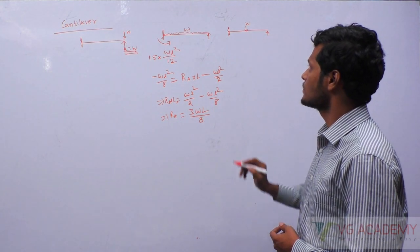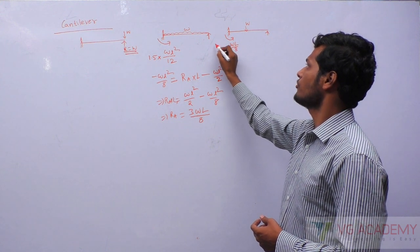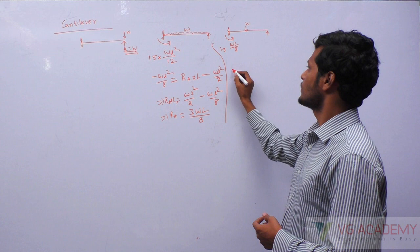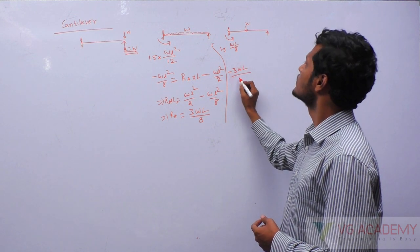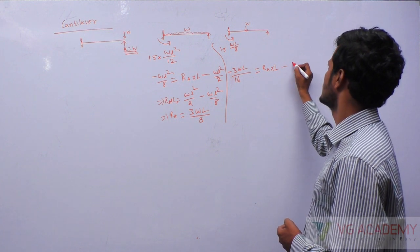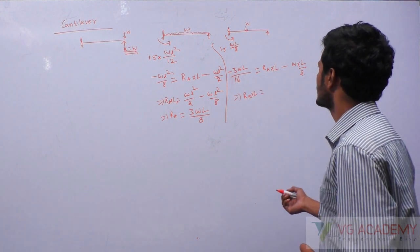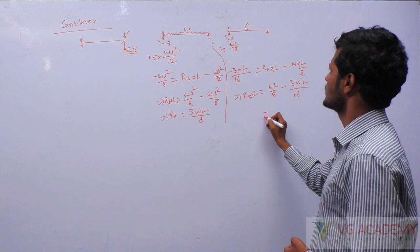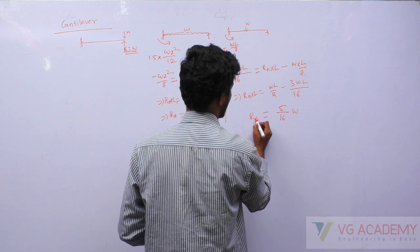The same trick I will apply for this case also. First, to find the moment here, write the fixed end bending moment WL/8 and multiply with 1.5. Now write a similar equation. So we get 3WL/16 minus 3WL/16 equals R_A into L minus W into L/2. R_A into L equals WL/2 minus 3WL/16, giving 5/16 WL for R_A into L/2.